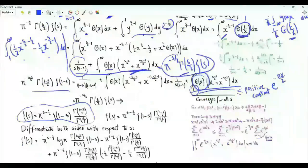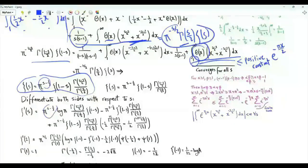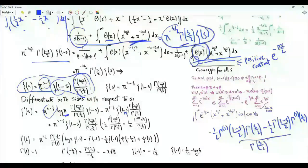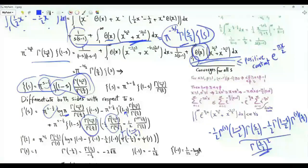Differentiating both sides of this functional identity with respect to s: differentiating pi to the s minus 1/2 gives the function times log pi. The derivative of zeta(1 minus s) contributes minus the derivative of zeta evaluated at 1 minus s. We also differentiate the ratio of gamma functions, obtaining minus 1/2 times the first derivative of gamma(1 minus s/2) times gamma(s/2) minus 1/2 times gamma(1 minus s/2) times the first derivative of gamma(s/2), all over gamma(s/2) squared. This can be written using digamma functions: inside the brackets we have minus 1/2 times digamma(1 minus s/2) minus 1/2 times digamma(s/2). This establishes a relation between the first derivative of zeta at s and at 1 minus s.